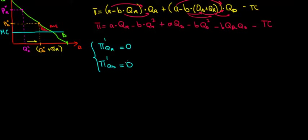Let's keep working on the math behind this question. Recall we want to differentiate this profit function with respect to the quantity of the regular customers and the quantity of the discount customers, so let's do exactly that. We start differentiating with respect to quantity of the regular customers — that's going to be our variable, and the rest is going to be our constant.